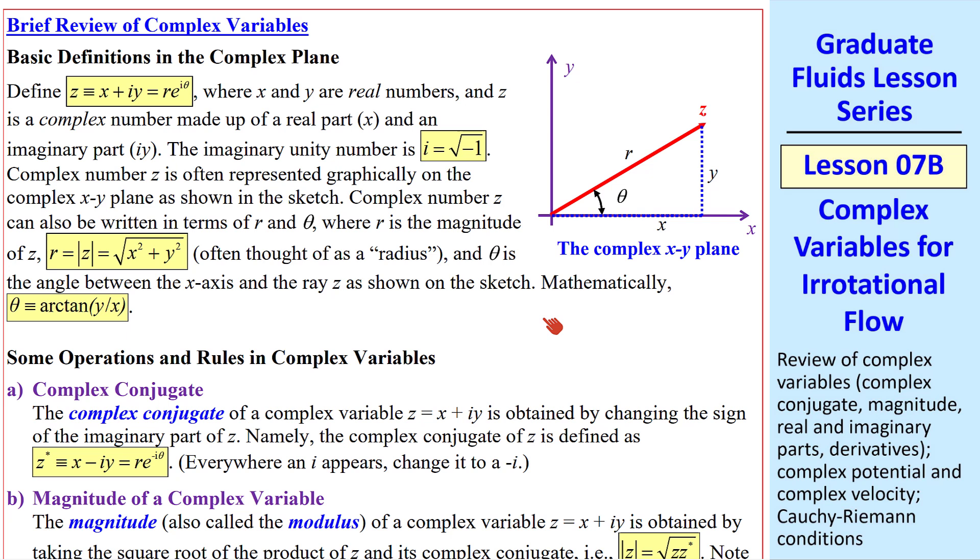First I'll give a very brief review of complex variables. We define complex variable z as x plus iy, or in cylindrical coordinates, r e to the i theta.